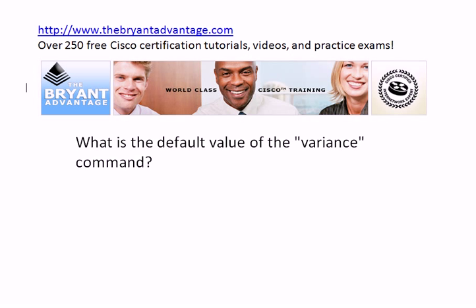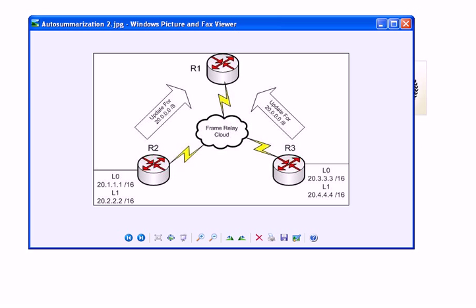The variance command's default value is not tricky, but it's sometimes misunderstood. And finally, we've got a visual question. Take a quick look at this illustration — let's assume we're running EIGRP over this particular network. We have a potential issue here. What is it? What can we do about it as far as EIGRP goes? What command will help us get around this potential issue? And more importantly, where do we need to configure this command? We forget that sometimes when we're learning new commands.